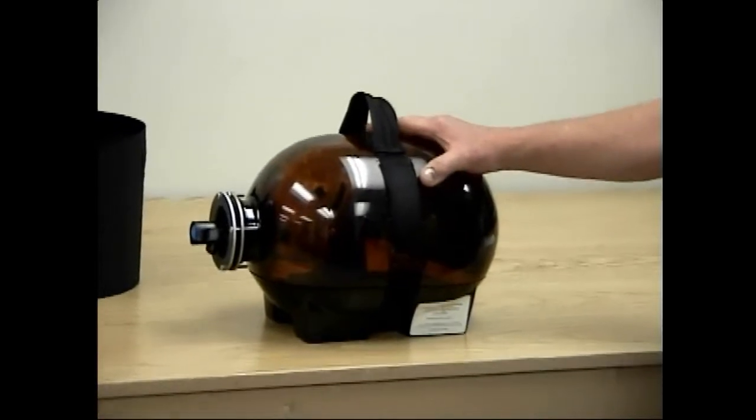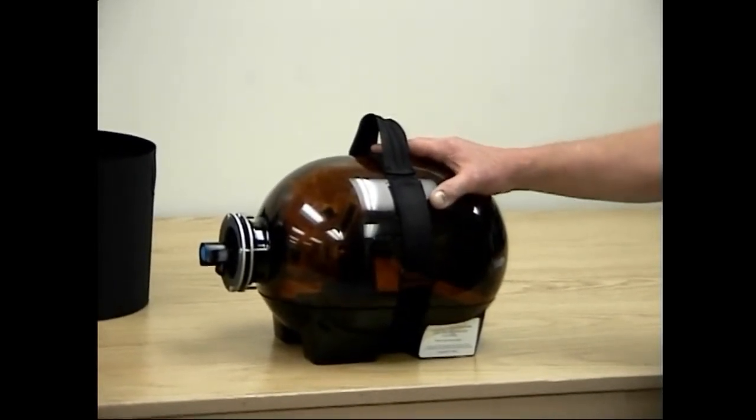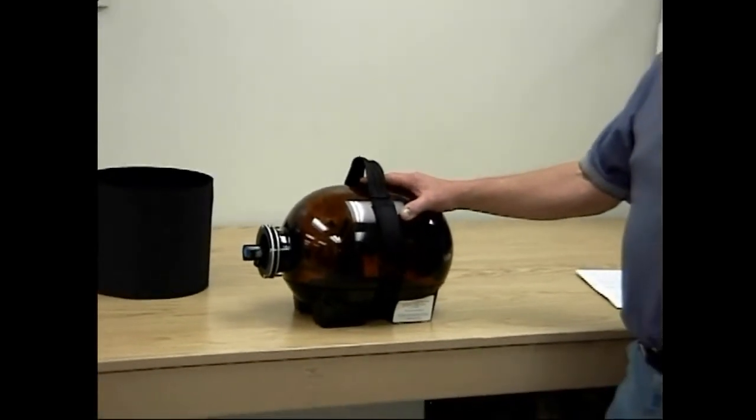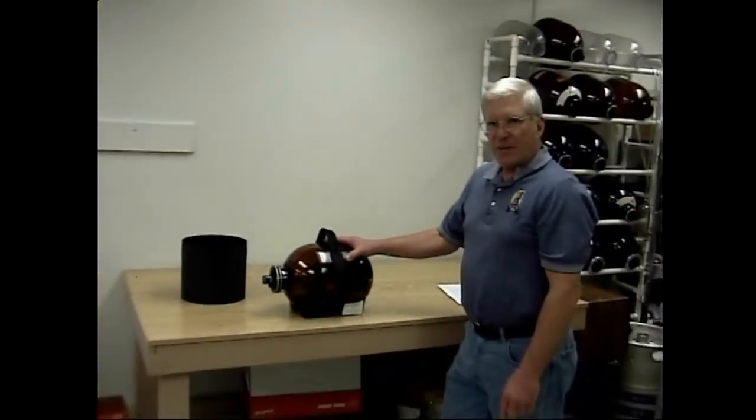This party pig is ready for aging, whatever is appropriate for the style of beer, and then it's ready to put into the fridge for 24 hours for a good thorough chilling before drinking. That concludes the lesson on how to pig your beer.